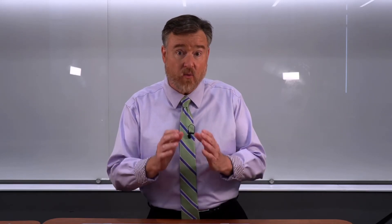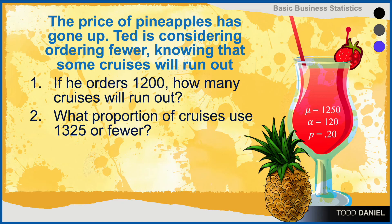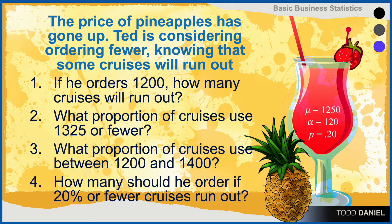I have created an Excel spreadsheet that we can use to find these proportions. We will also answer questions like: the price of pineapples has gone up, so Ted is considering ordering fewer, knowing some cruises will run out. If he orders 1,200, how many cruises will run out? What proportion of cruises use 1,325 or fewer? What proportion use between 1,200 and 1,400? Or how many pineapples should he order if he wants 20% or fewer of cruises to run out? Let's turn to that Excel spreadsheet and find those answers.